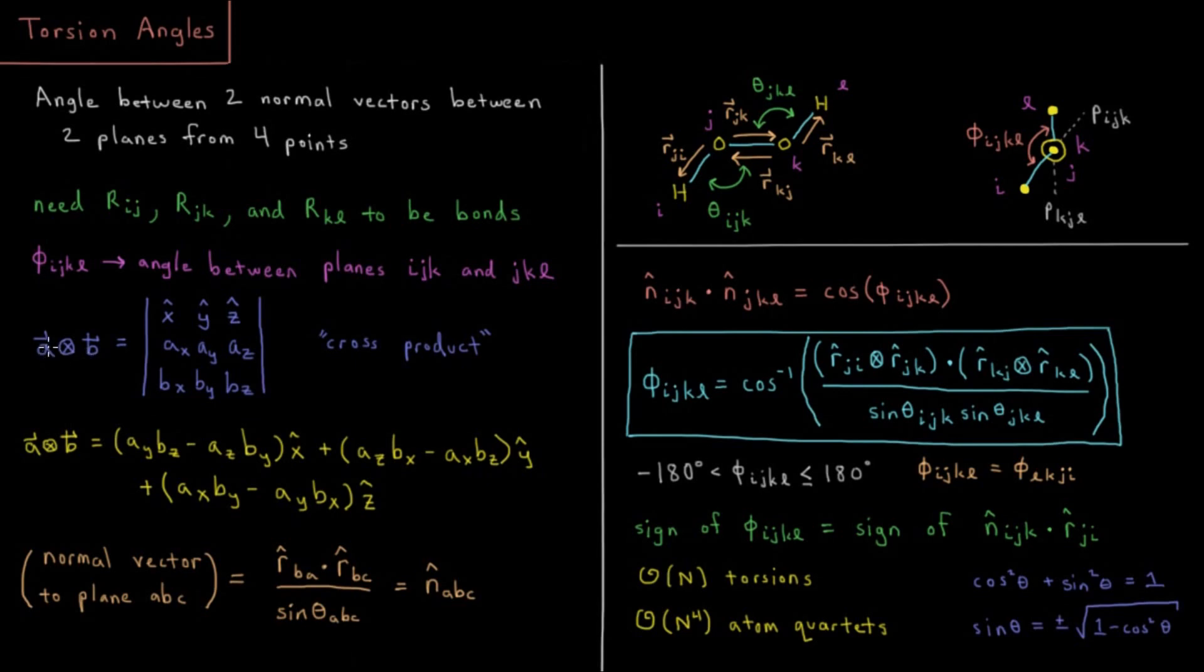Both of these vectors need to be non-parallel, so that's already taken care of as long as these three atoms and those three atoms are non-linear. So we need these to be non-parallel vectors. And the cross product is going to give us a vector which is perpendicular to both of them.